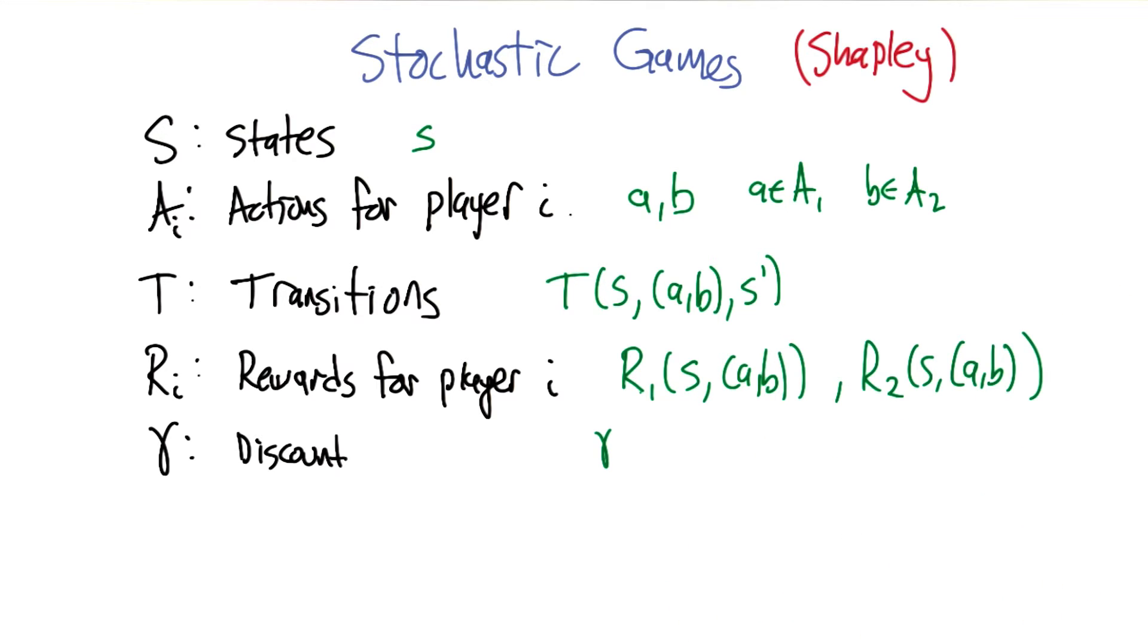Hey, not to go off on a tangent here, but sometimes I see MDPs and things like stochastic games defined with the discount factor being a part of the definition and sometimes not. Like it's just a part of the definition of the problem or sometimes it's a parameter of an algorithm.